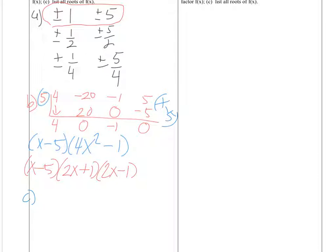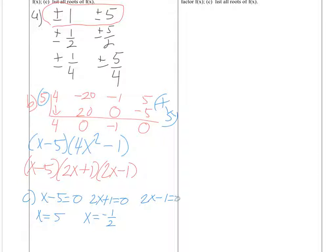Part C — identify the zeros or the roots. Each parenthesis we set equal to 0. x minus 5 equals 0, so x equals 5. 2x plus 1 equals 0, so x equals negative 1 half. And 2x minus 1 equals 0, so x equals positive 1 half.